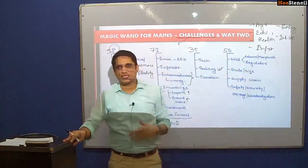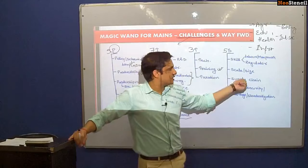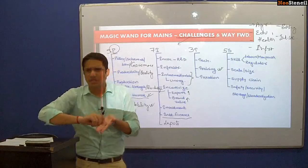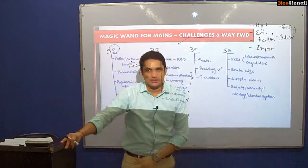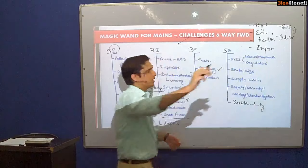The fourth S is supply chain — in the agriculture sector the supply chain is less developed and is not connected to primary, secondary, tertiary, and international markets. The fifth S covers safety, security, storage, and standardization — all of which are problems. The final type of agriculture needed is sustainability. These are the 20 dimensions of the agriculture sector.